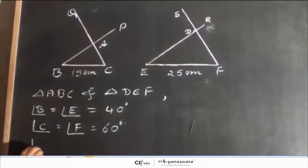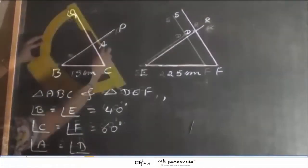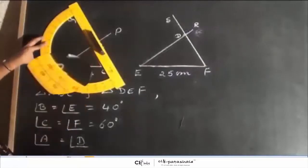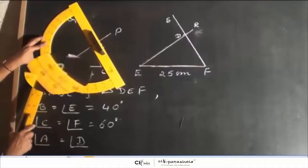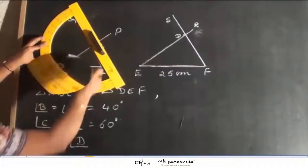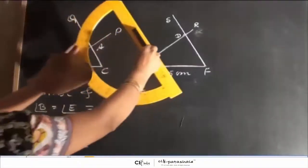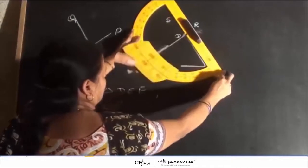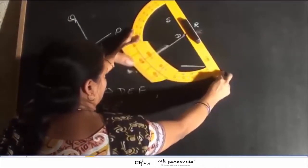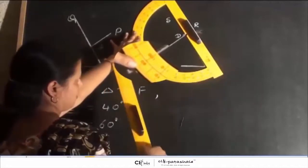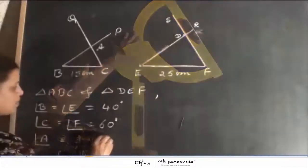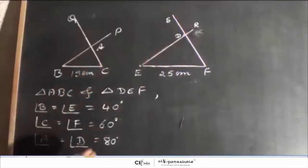Now let us measure angle A and angle D. Angle A is equal to 80 degrees. Similarly, we will measure angle D which is also equal to 80 degrees. Angle A is equal to angle D which is equal to 80 degrees.